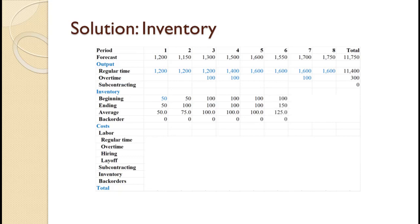For period six, the forecast is 1500 and total production is 1600, so inventory goes up by 50 to 150, giving an average inventory of 125 with no back orders. For period seven, the forecast is 1700 and total production is 1700, so inventory remains at 150 with no back orders, giving an average inventory of 150. For period eight, the forecast is 1750 and total production is 1600, so inventory drops by 150 to 0, giving an average inventory of 75 with no back orders.